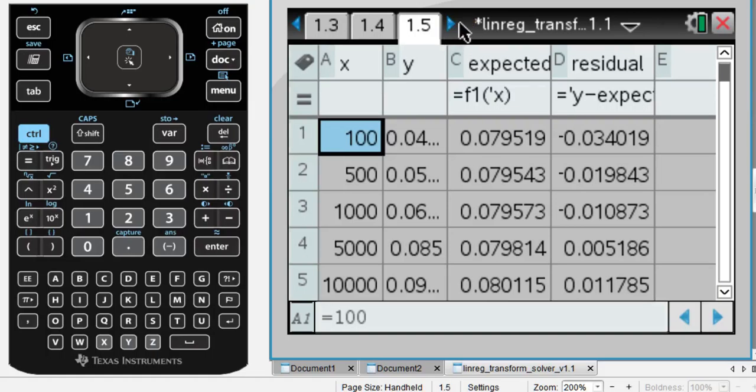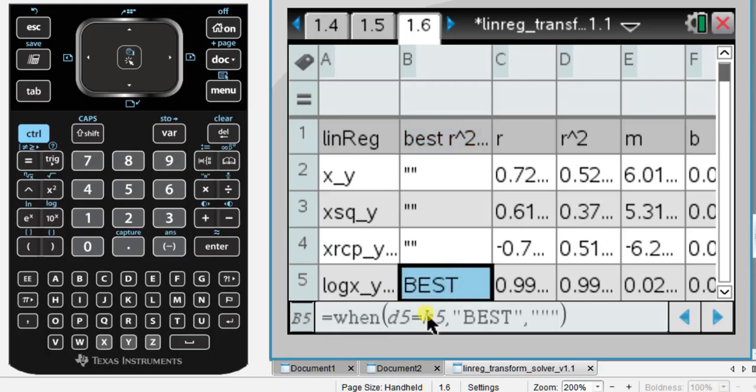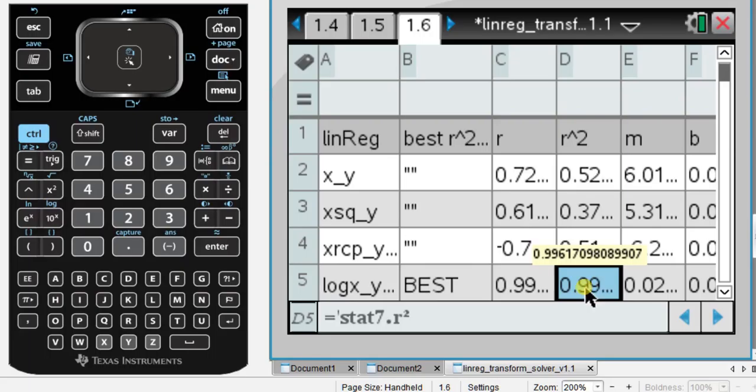We just need to decide what type of transformation. 1.5, notice it's grayed out. Just don't touch it. 1.6, this is where most of the magic happens. So I've got this column where it says best r squared, and I look down until it says best. Okay. Now, that's saying that log x is the best transformation. Again, we only ever do a transformation on 1 of x or y. So in this case, we're doing the transformation log of x, but we're leaving y as is. The reason it's best has to do with this lovely value here, the r squared. Notice it's about 0.99617. That's pretty darn good. So it's a very close model. So I'm going to use my log x transformation.